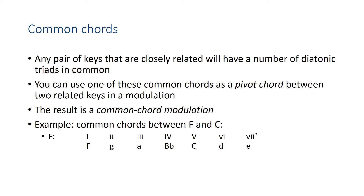Comparing those with the chords in the key of C, we can see which ones are the same. In C major: C major is the 1 chord — that's in common. The 2 chord in C is D minor — also in common. The 3 chord in C is E minor, not E diminished, so that's not a common chord. F major in C is the 4 chord — that's the same as the 1 chord in F major, so that's shared. G major is the 5 in C, but G minor is the 5 in F — those are different, so not a common chord. A minor is the 6 in C — that's shared. And B diminished is the 7 in C — not a common chord. So there are 4 chords that can serve as a pivot chord between F major and C major.